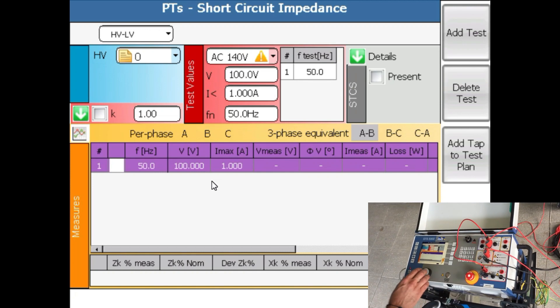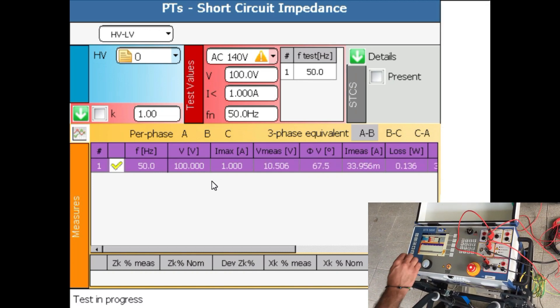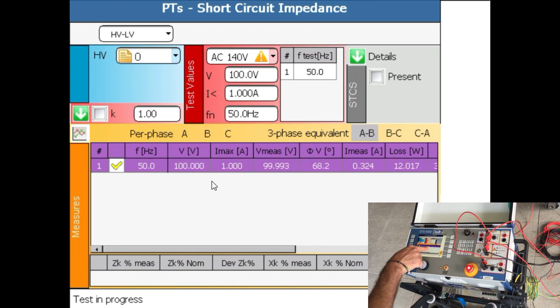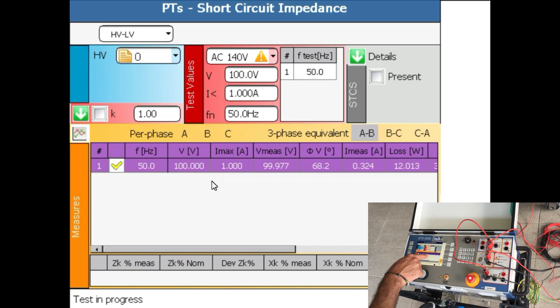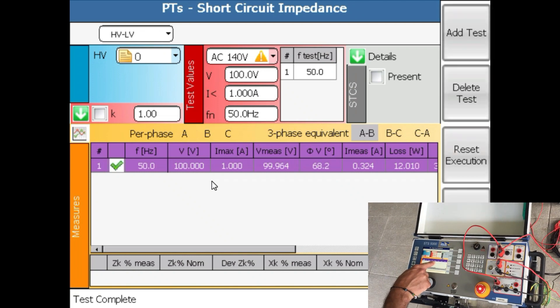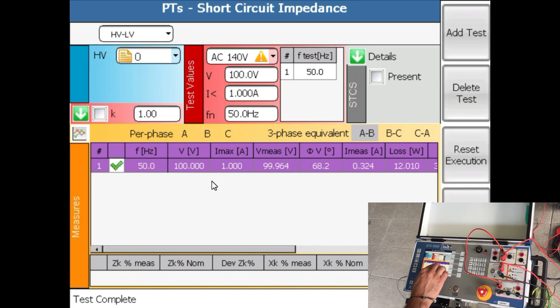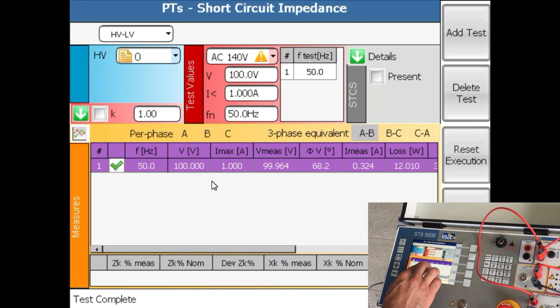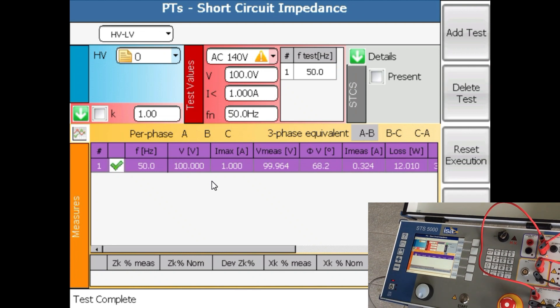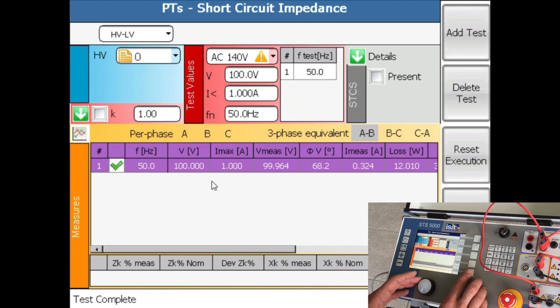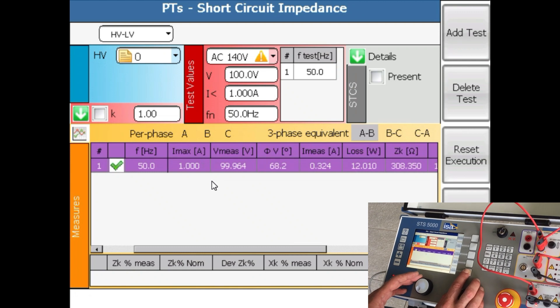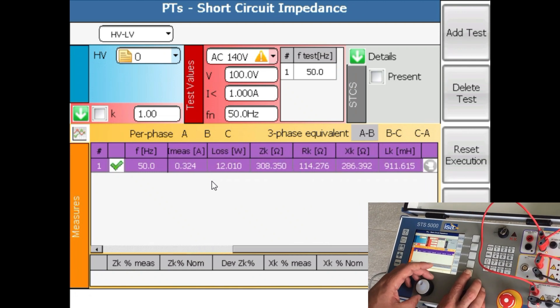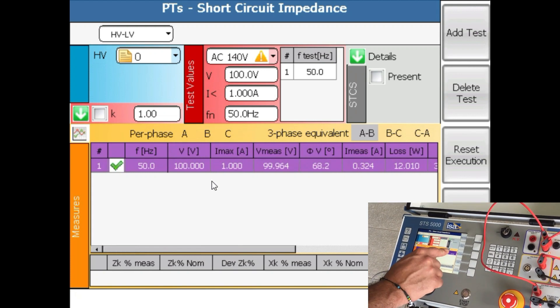What we are seeing here is that the voltage is 100.00 or 99.98 so it needs to stabilize. We generated for phases AB 99.964 very close to 100 volts. 0.324 amps are measured. We can also see that the losses are 12 watts. There is impedance, there is resistance, there is reactance and these are the data we got for these two phases.